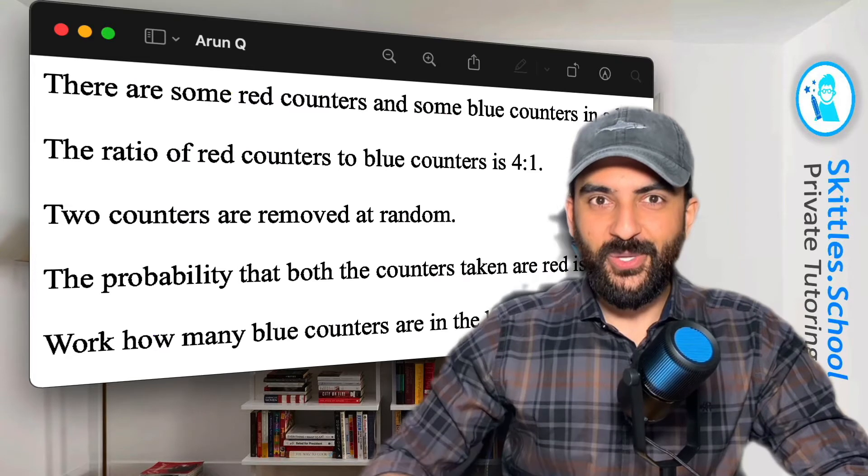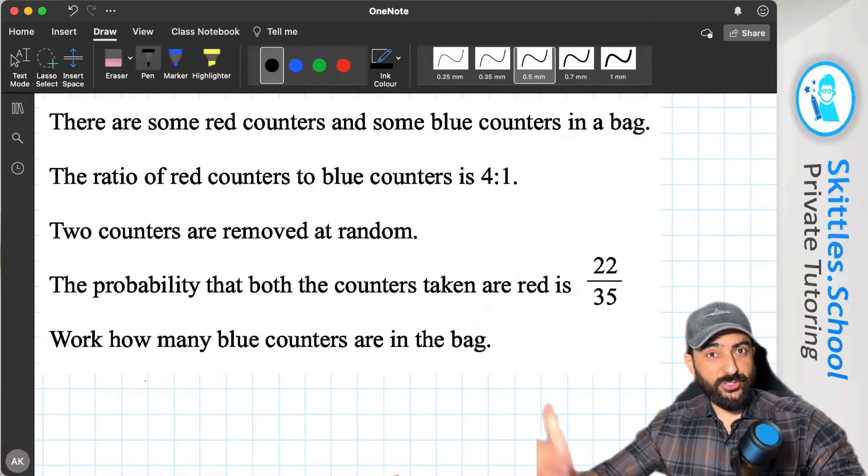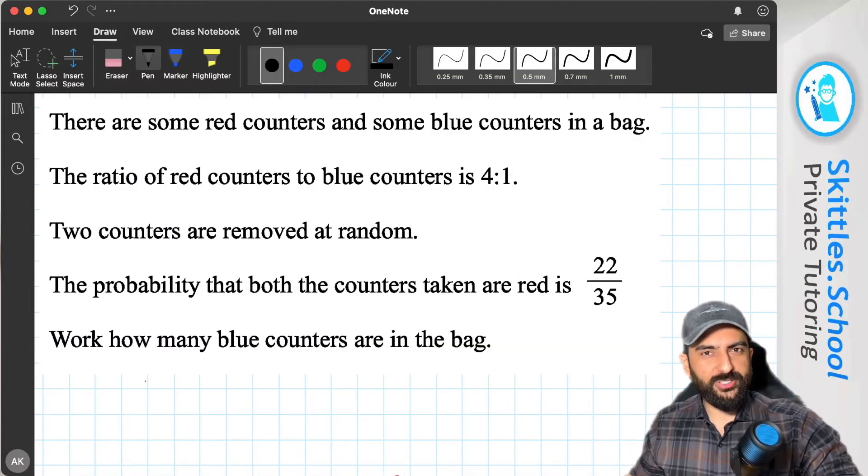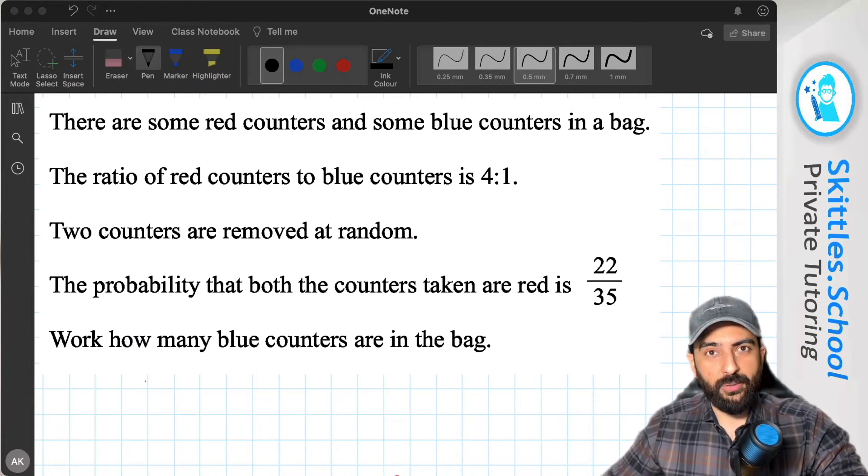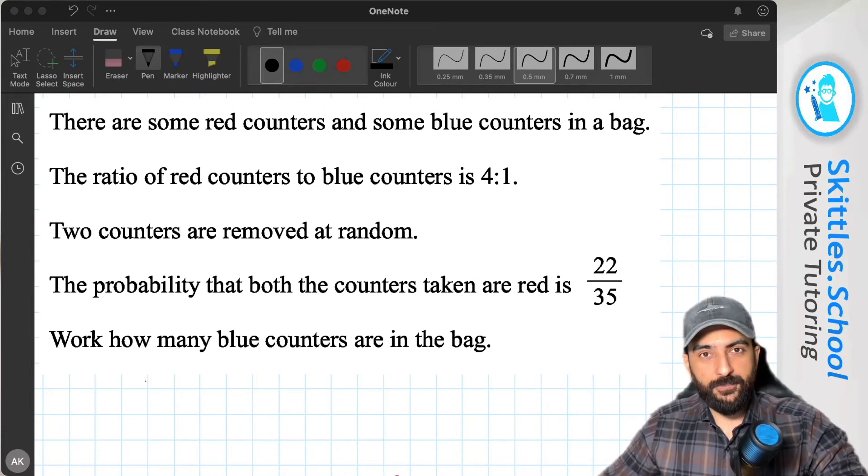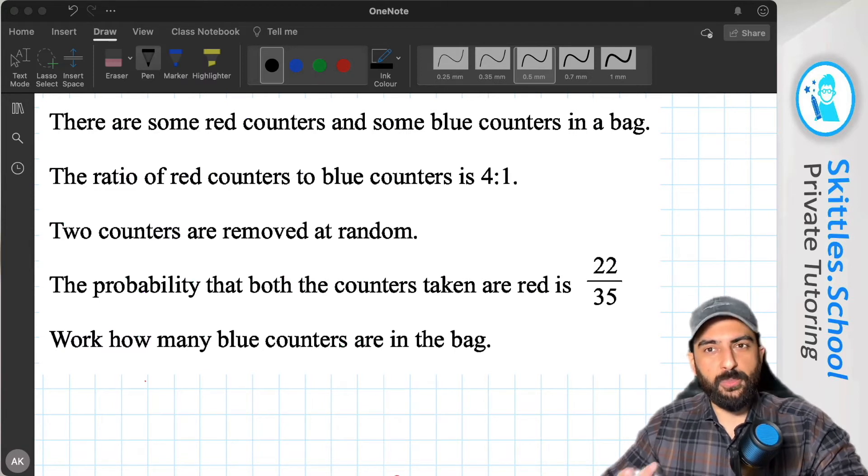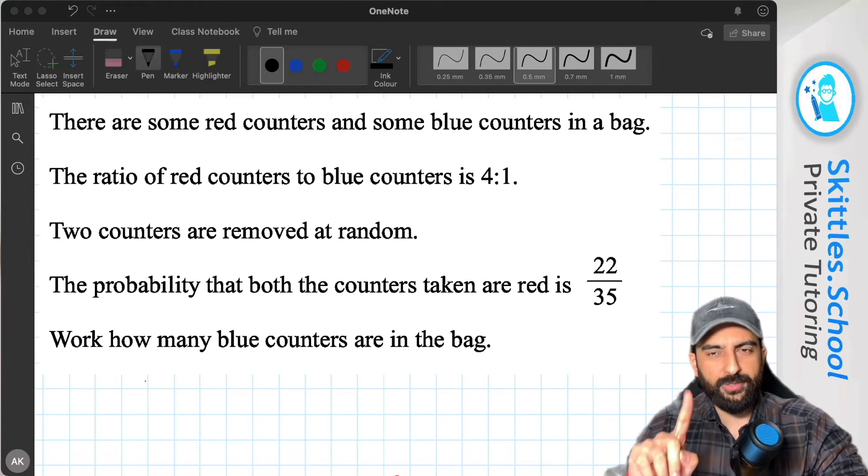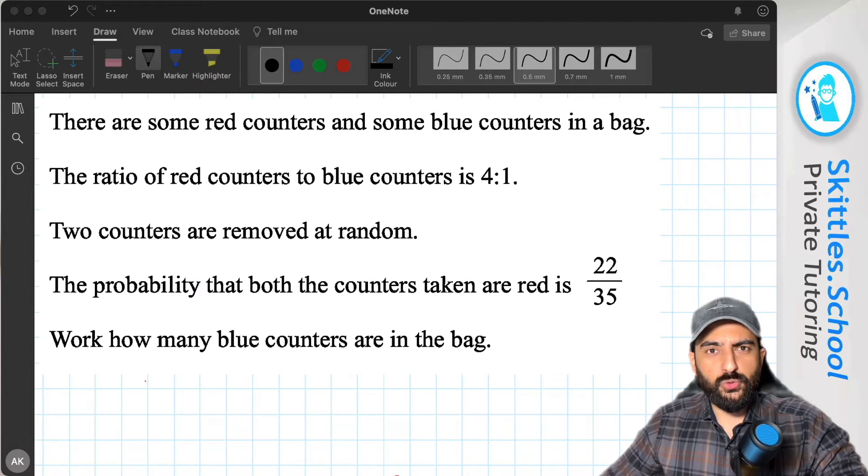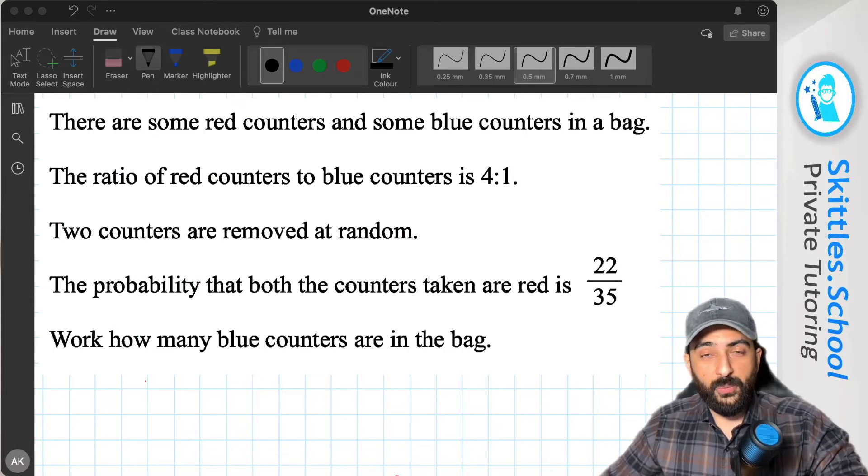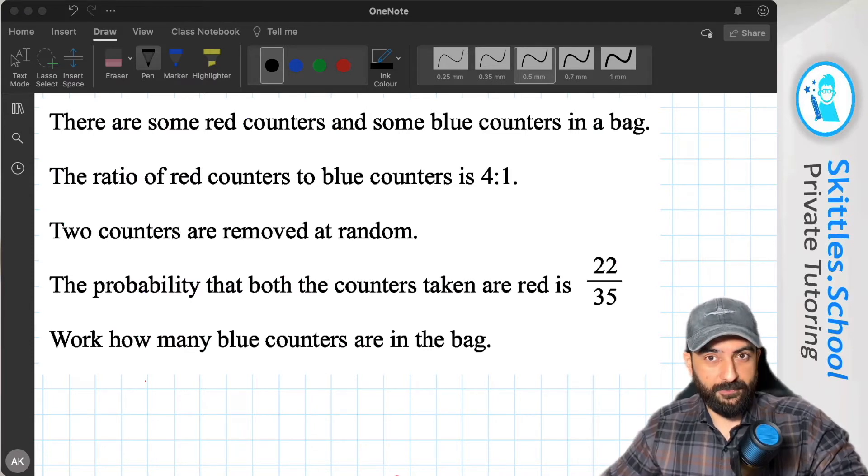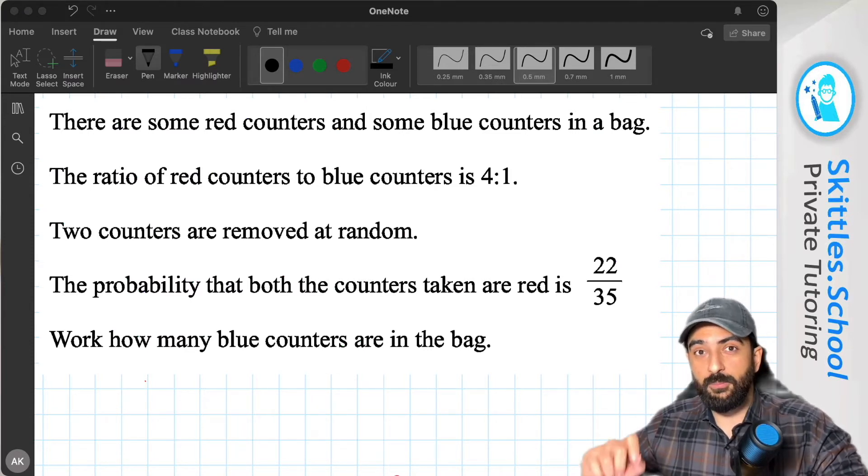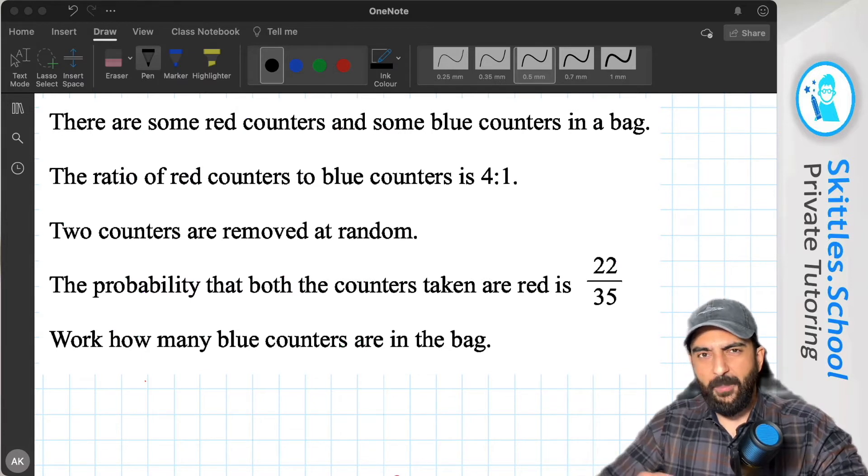Okay, let's go through this question. So here's the question on our virtual whiteboard. Now the question says, there are some red counters and there are some blue counters in a bag. The ratio of red counters to blue counters is 4 to 1. We're going to choose two counters at random. And the probability that we get two red counters is 22 out of 35. We've got to work out how many blue counters were in the bag initially.